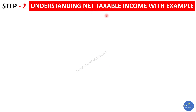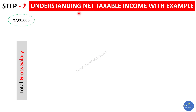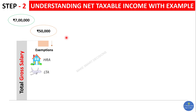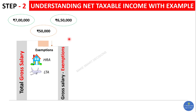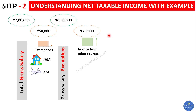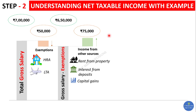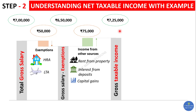Now how to compute net taxable income. Let's take an example where someone's total gross salary is seven lakhs. First, remove exemptions like House Rent Allowance and LTA — bringing gross salary minus exemptions to six lakh fifty thousand. Then add income from other sources: interest from deposits of fifteen thousand and rent income of sixty thousand, totalling seventy-five thousand. So the total taxable income becomes seven lakh twenty-five thousand.